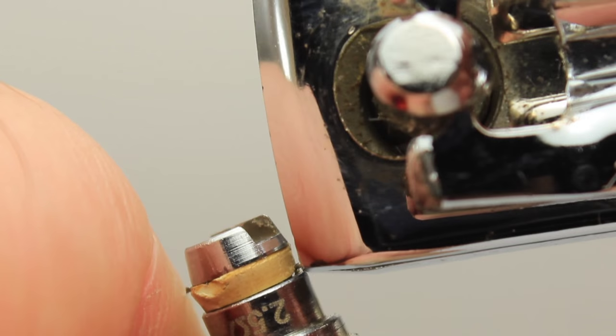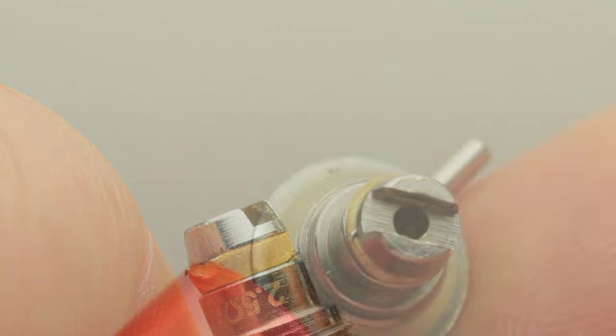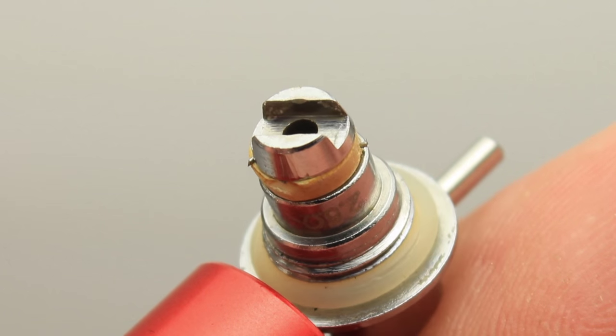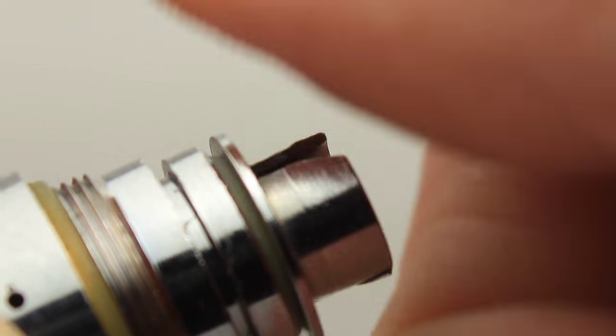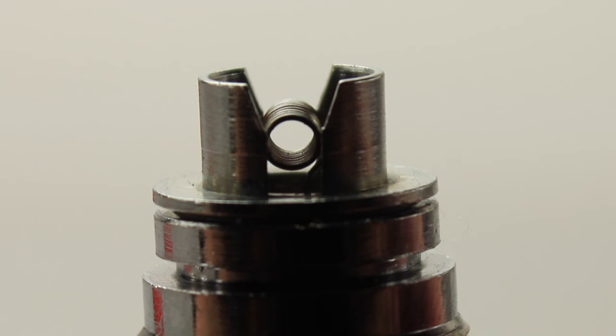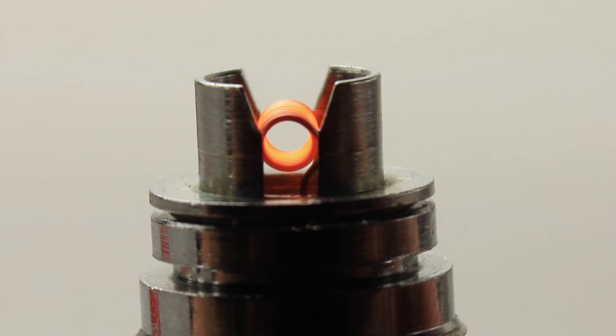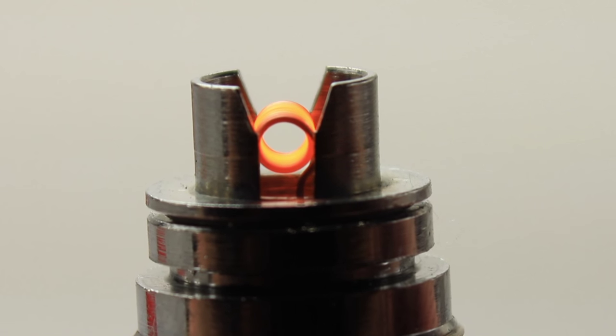Snip off the excess wire. I usually screw the new coil onto an EVOD base and check it on a battery. This also burns off any residue that may be on the wire.